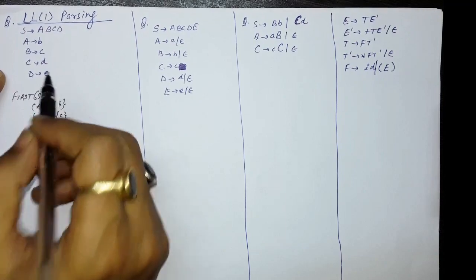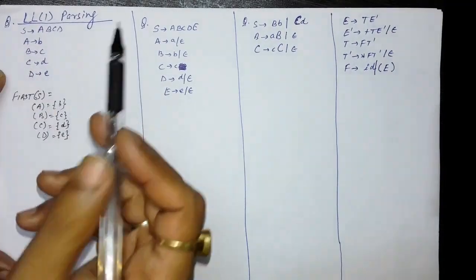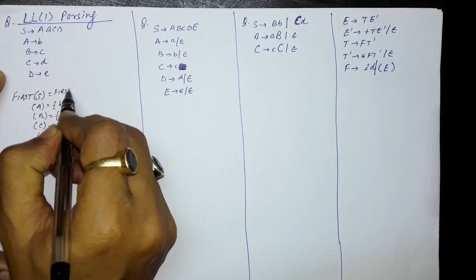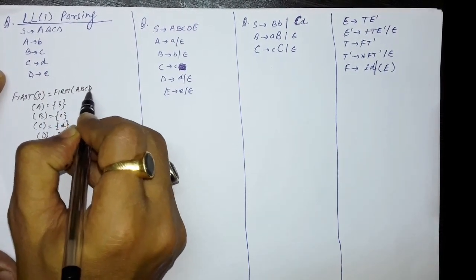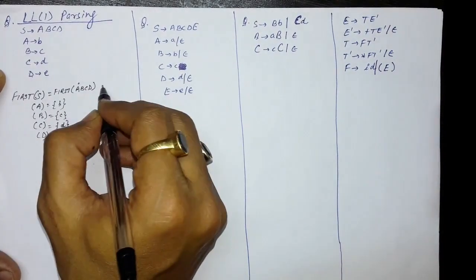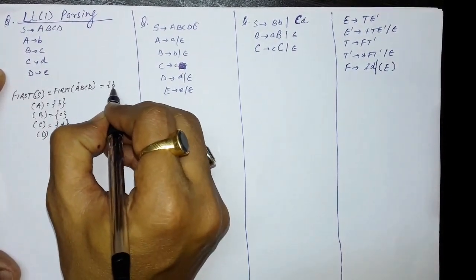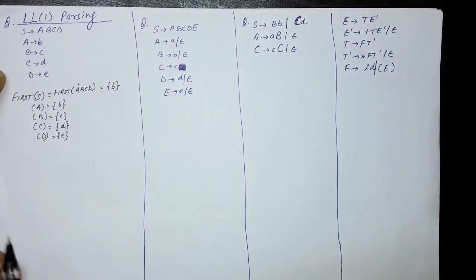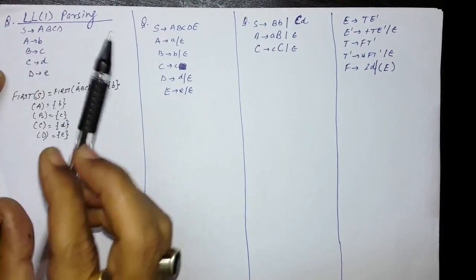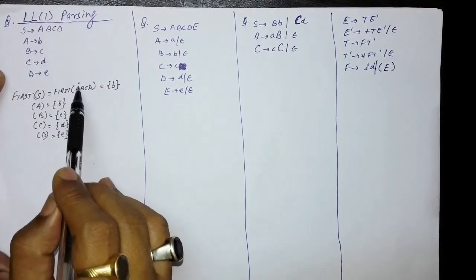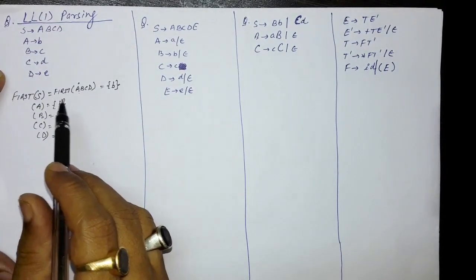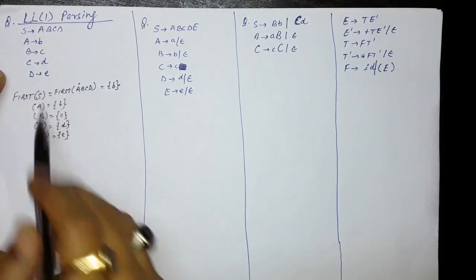Similarly, FIRST of S means FIRST of the right hand side, which is FIRST of ABCD. FIRST of ABCD means FIRST of A, and FIRST of A means small b. So FIRST of S equals small b. FIRST of S is the FIRST of the right hand side of the production, so FIRST of ABCD means FIRST of A, and FIRST of A is b. So these are the FIRSTs for all the non-terminal symbols.